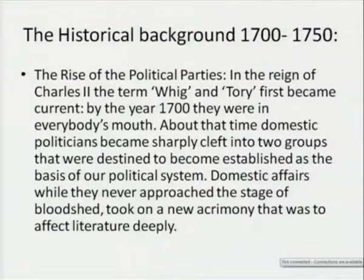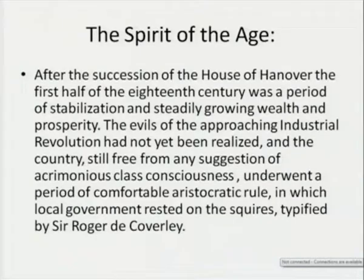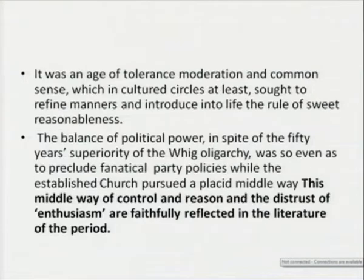When we look into the history of the rise of the political parties, as we have seen, the Whig and the Tory first became current in domestic affairs, and were also somehow influencing the representation of the time. After the succession of the house of Hanover, the first half of the 18th century was a period of stabilization and steadily growing wealth and prosperity. Their new classical style employed Roman forms such as the ode and emphasized reason over emotion and elegance over brevity.